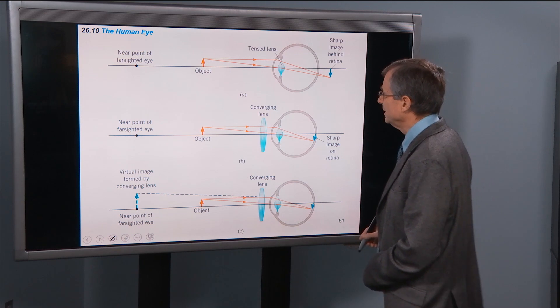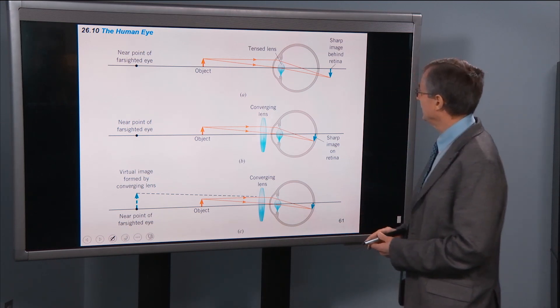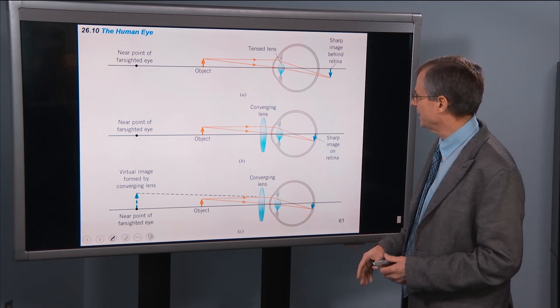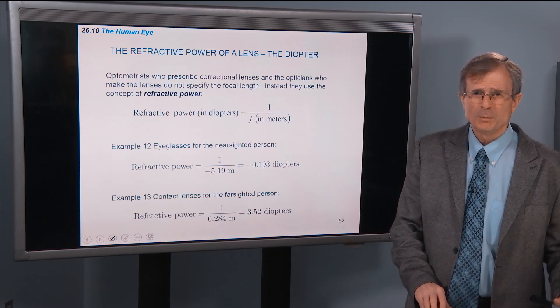So a farsighted person is, so we're going to talk a little bit about the farsighted and nearsighted persons, just a little bit.